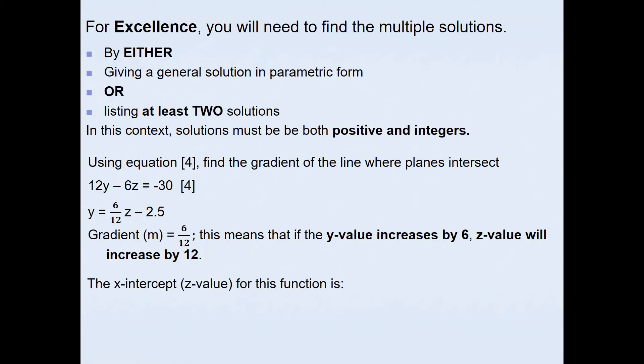We can quickly calculate the X intercept. The X intercept for the place where the planes are intersecting on a line will give us the Z value, because we've got Z in this function. That is given by when Y = 0. So if I solve this, 0 = 0.5Z - 2.5, Z comes to 5 when Y is 0. That's our intercept. We already know that the solutions must be positive and integer values.